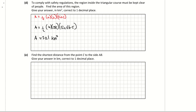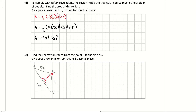Part e asks for the shortest distance from point C to the side AB. Sketching the triangle again with AC = 28, CB = 4, AB = 30 — the shortest distance from C to AB is a perpendicular line to that side. The shortest distance always creates a 90-degree angle.